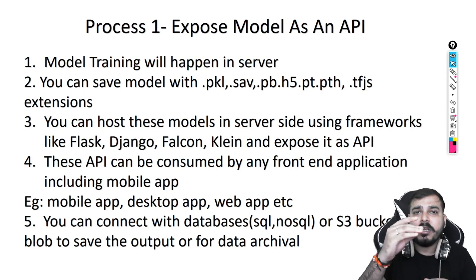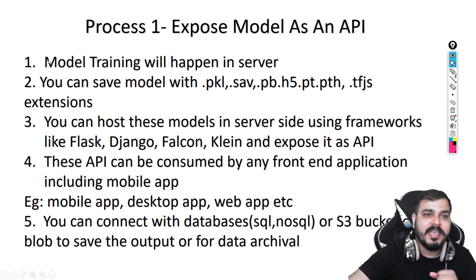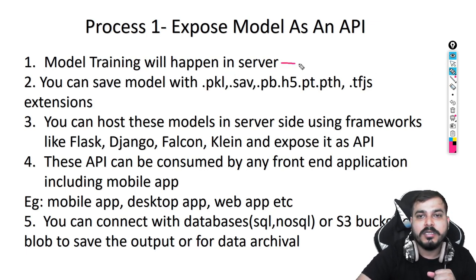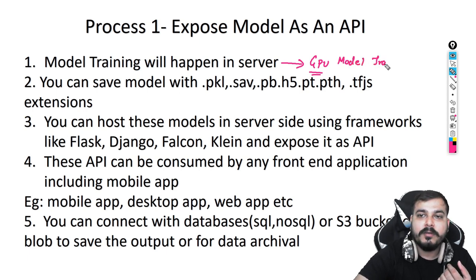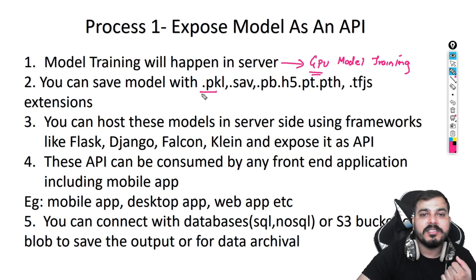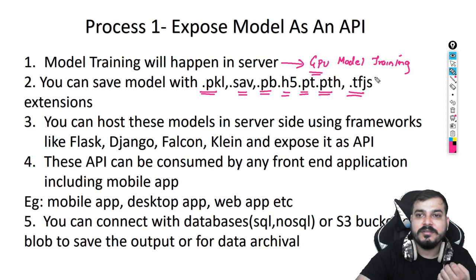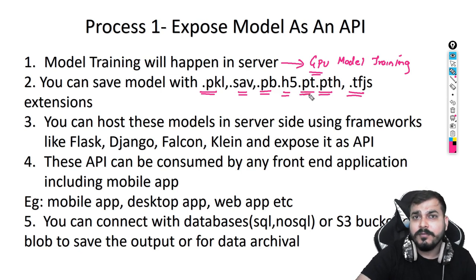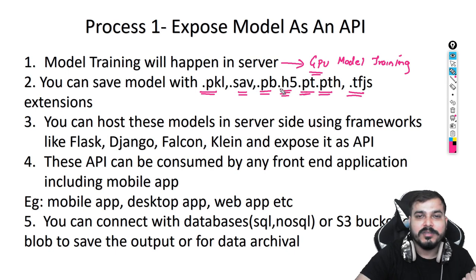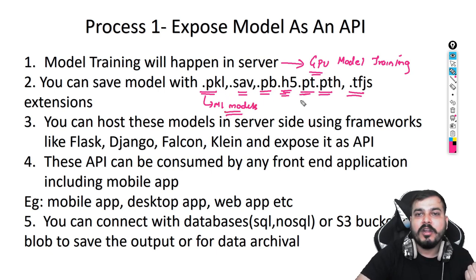The first step is model training, which will happen in the server — wherever you have the GPU, that's where model training will happen. Once the model training is done, you can save the model in formats like .pkl, .sav, .pb, .h5, .pt, .pth, or .tfjs (TensorFlow.js). The .h5 format is used with Keras, .pkl is for ML models, and .pt is for PyTorch models. These are all the extensions you can use to save ML or deep learning models.